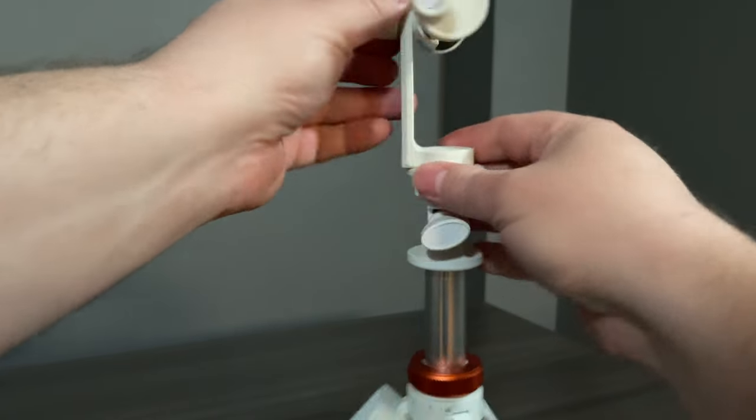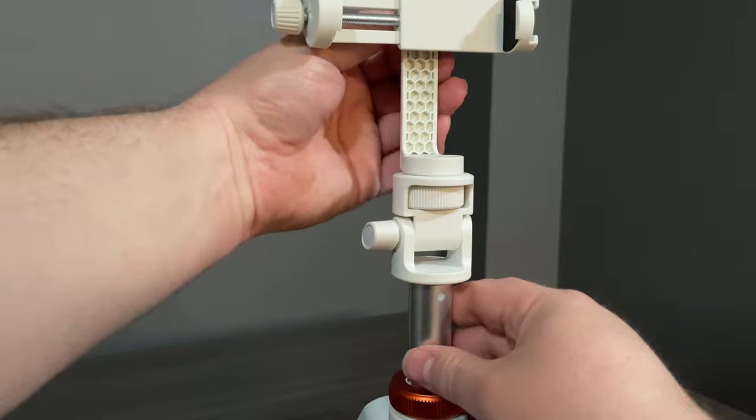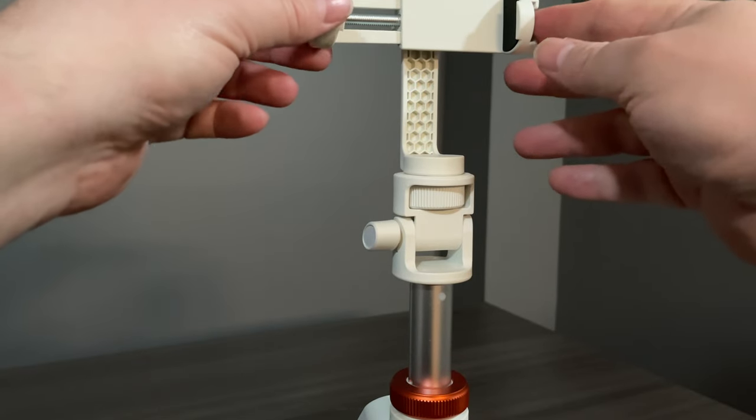We tighten the screw on the back and that holds our attachment in position. Now we can size it for our phone.